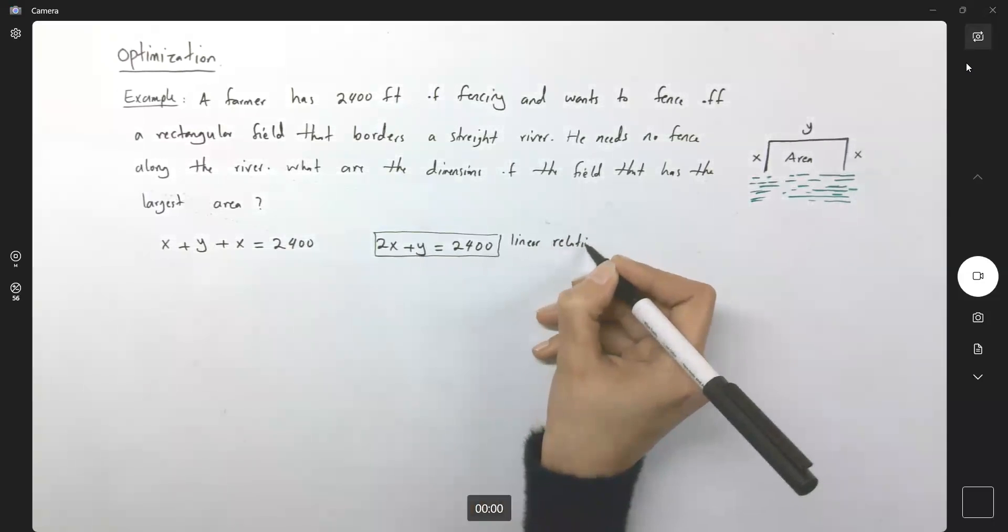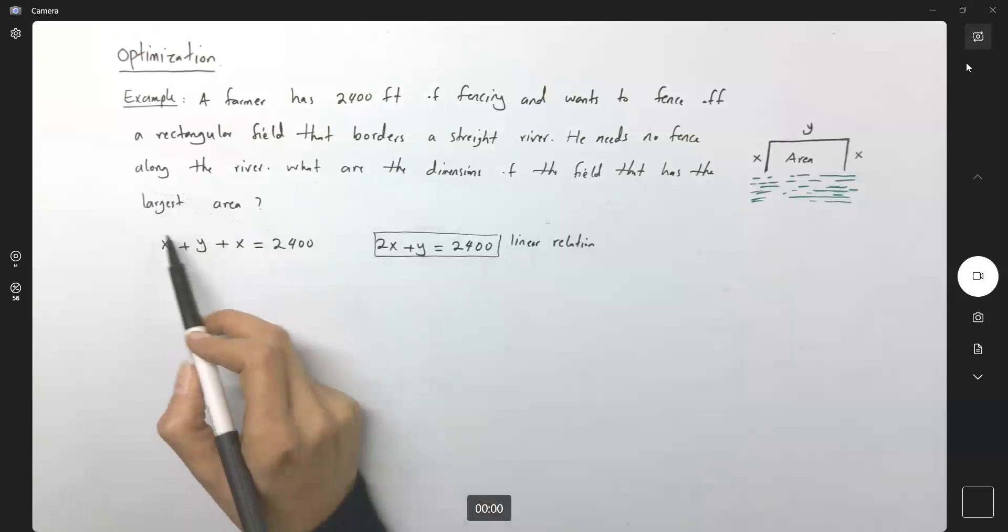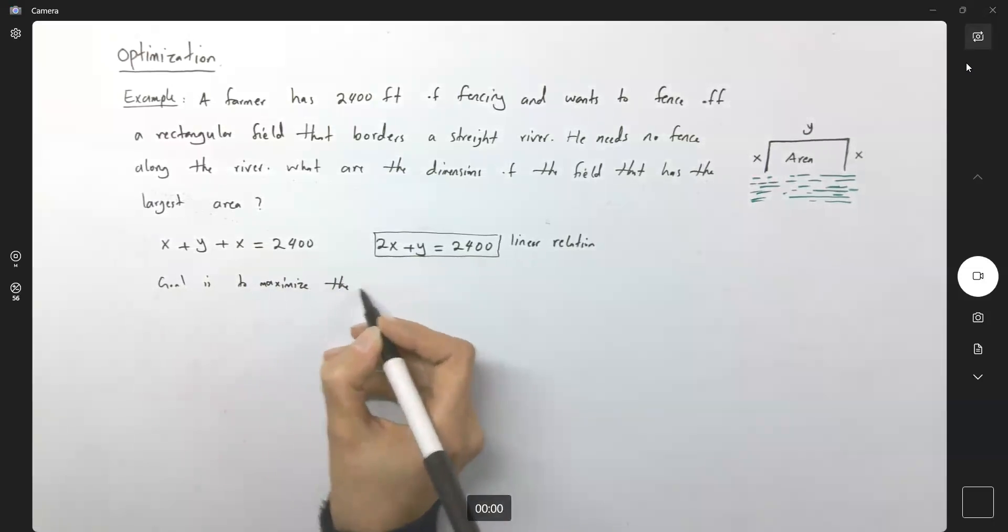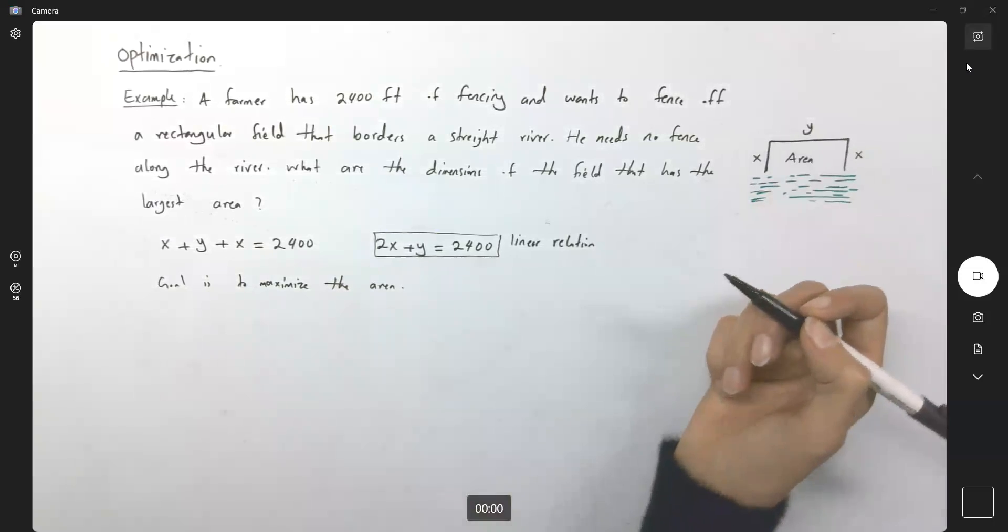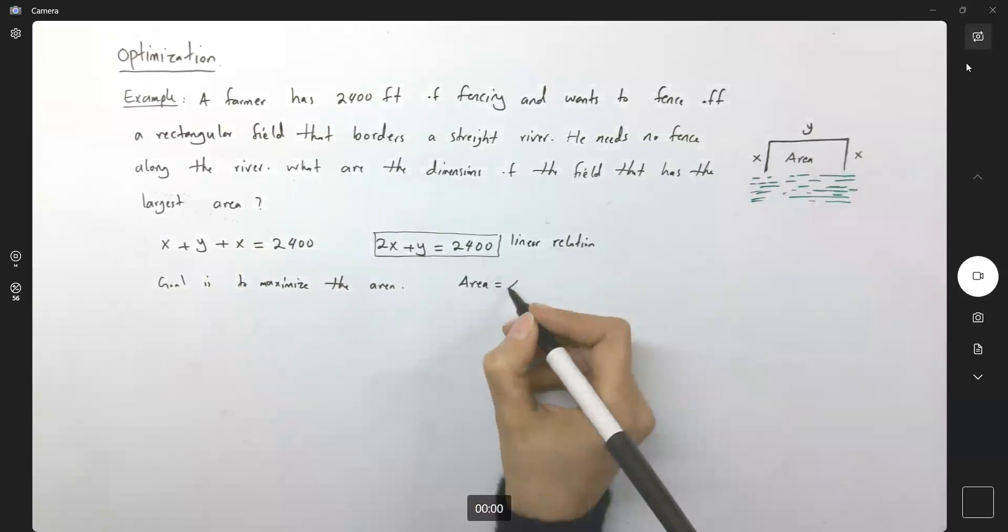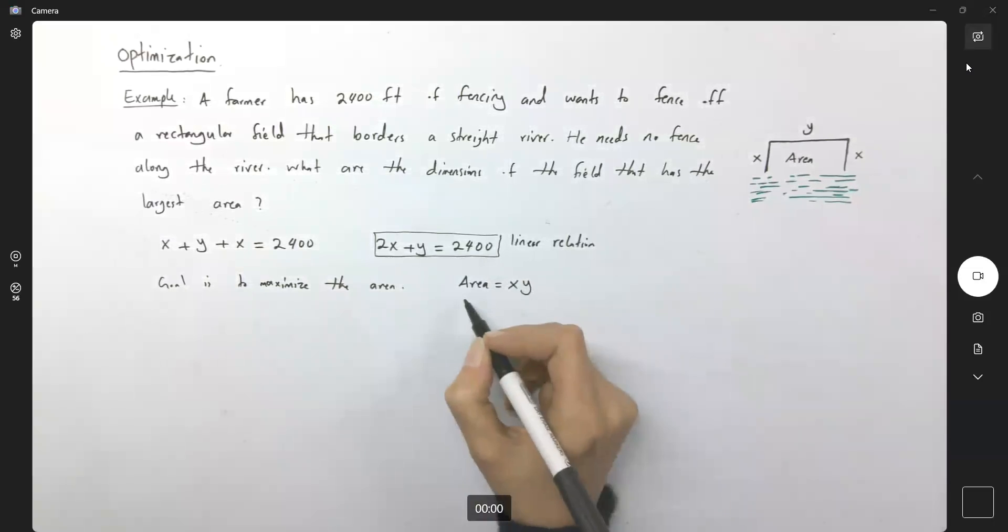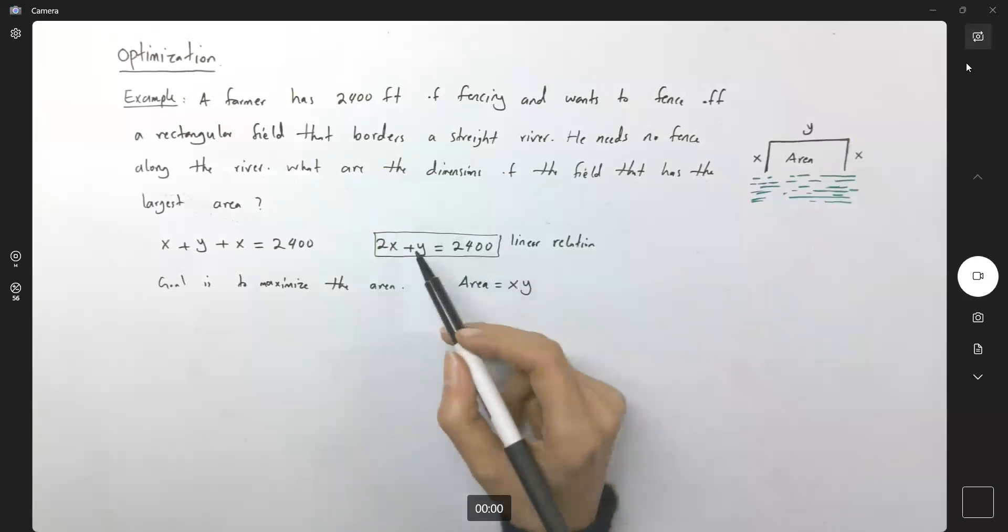Linear relation. And at the same time, we want to find the dimensions of the field that has the largest area. So the goal is to maximize the area. But what is the area of a rectangular object in this scenario? Area is equal to x times y, or if you want to write it as a function of x or a function of y, it doesn't matter which one you're using. You have to find the relation between x and y and substitute that here.